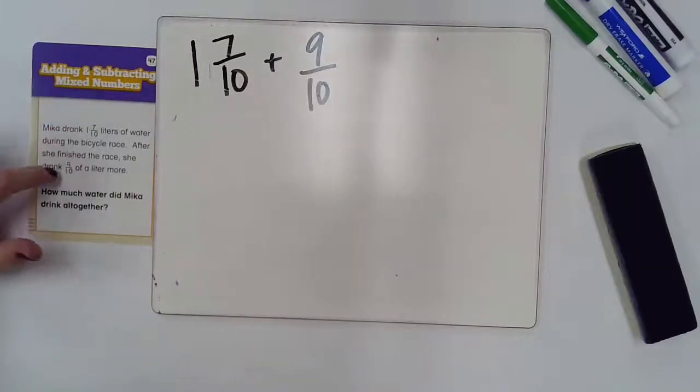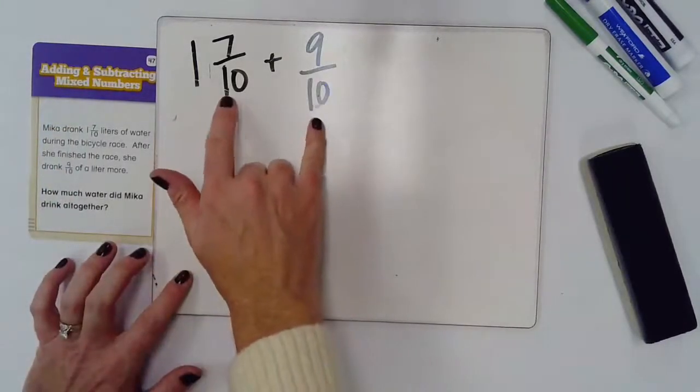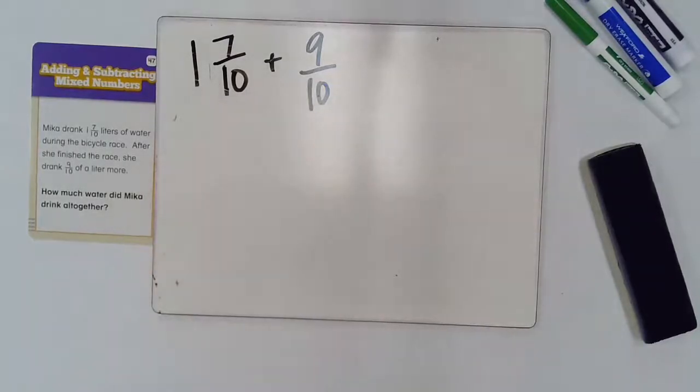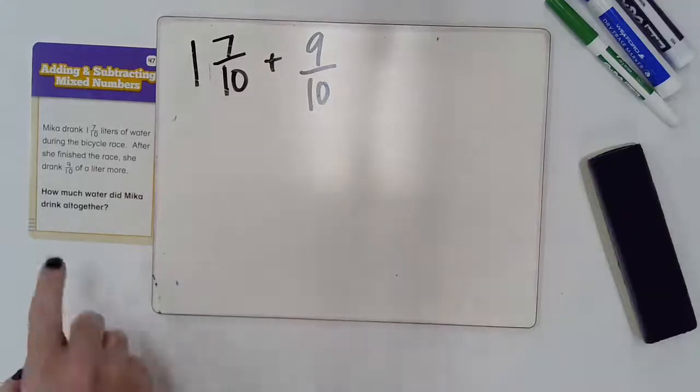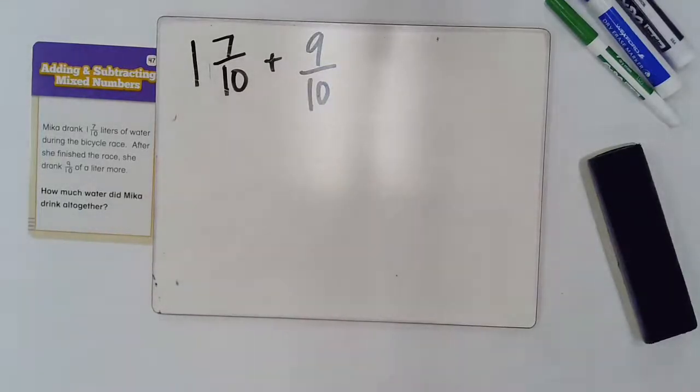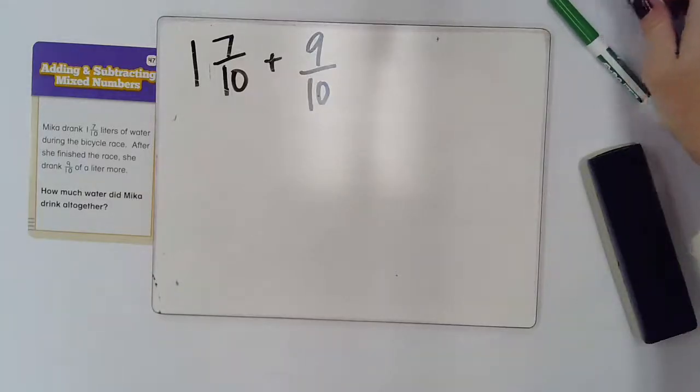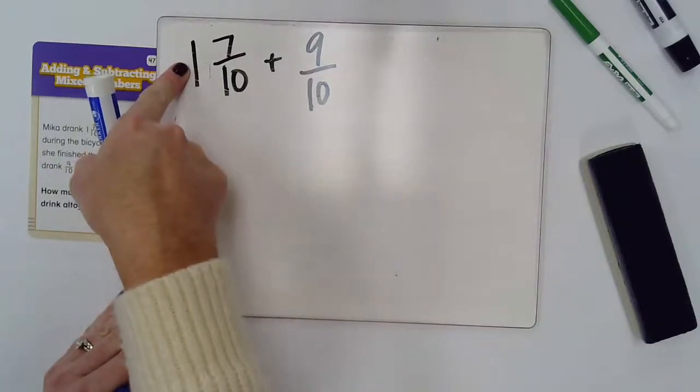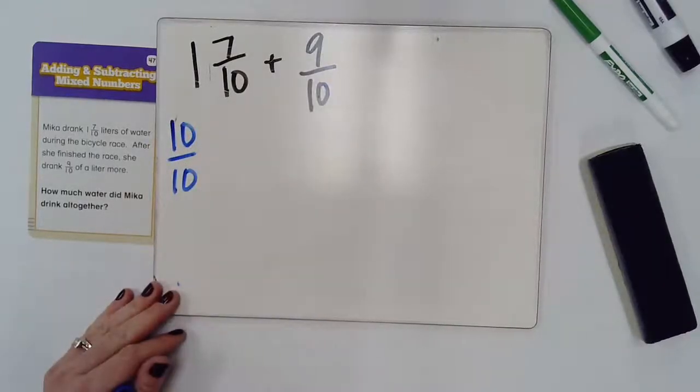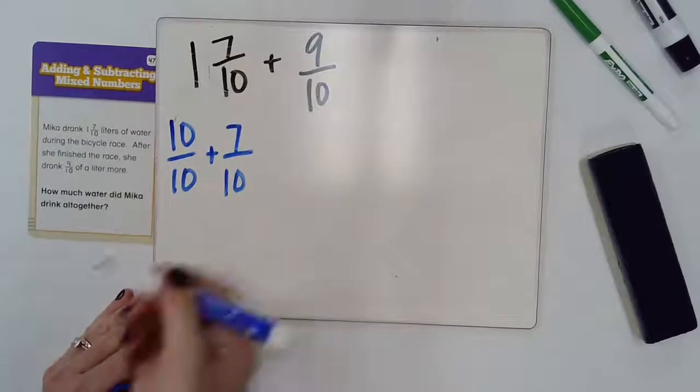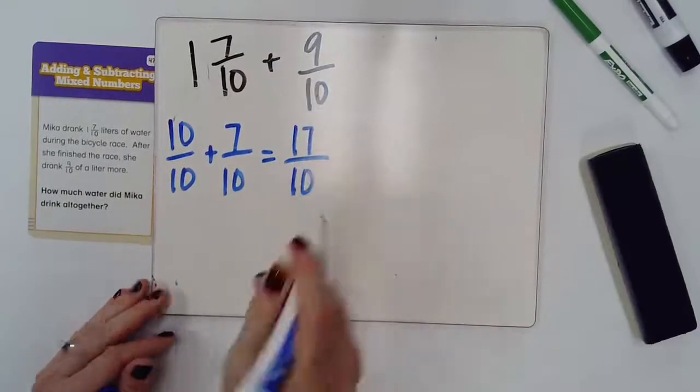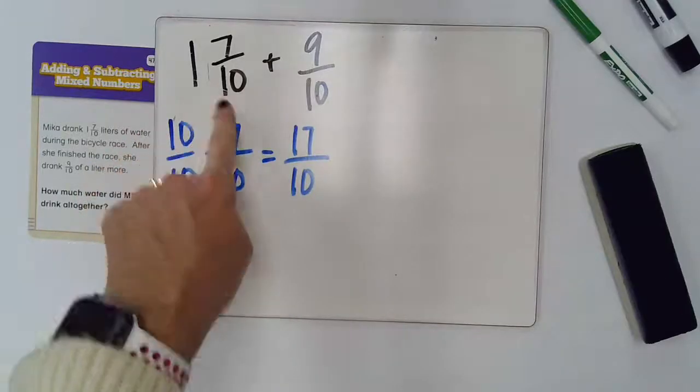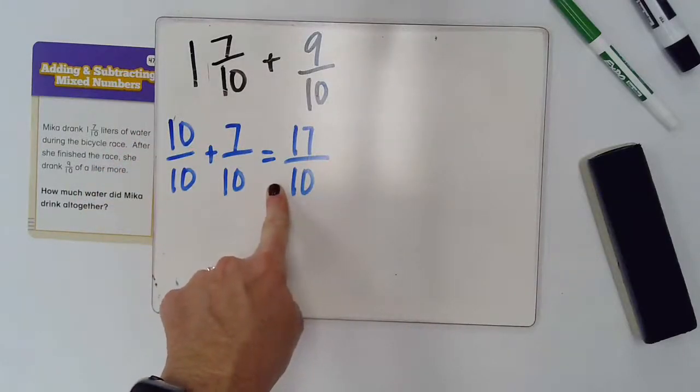We know we have 1 and 7 tenths and we have 9 tenths. And when I think about that, if I add up these fractions, it's going to go over a whole. And again, I'm trying to figure out how much all together. So, in order to solve this particular one, I'm going to turn these into improper fractions. So, let's take a look at 1 and 7 tenths. Well, I know in order to create 1 as a fraction, I would have 10 tenths and then just add it with my 7 tenths, which would give me 17 tenths. Because 1 and 7 tenths is equivalent to 17 tenths.